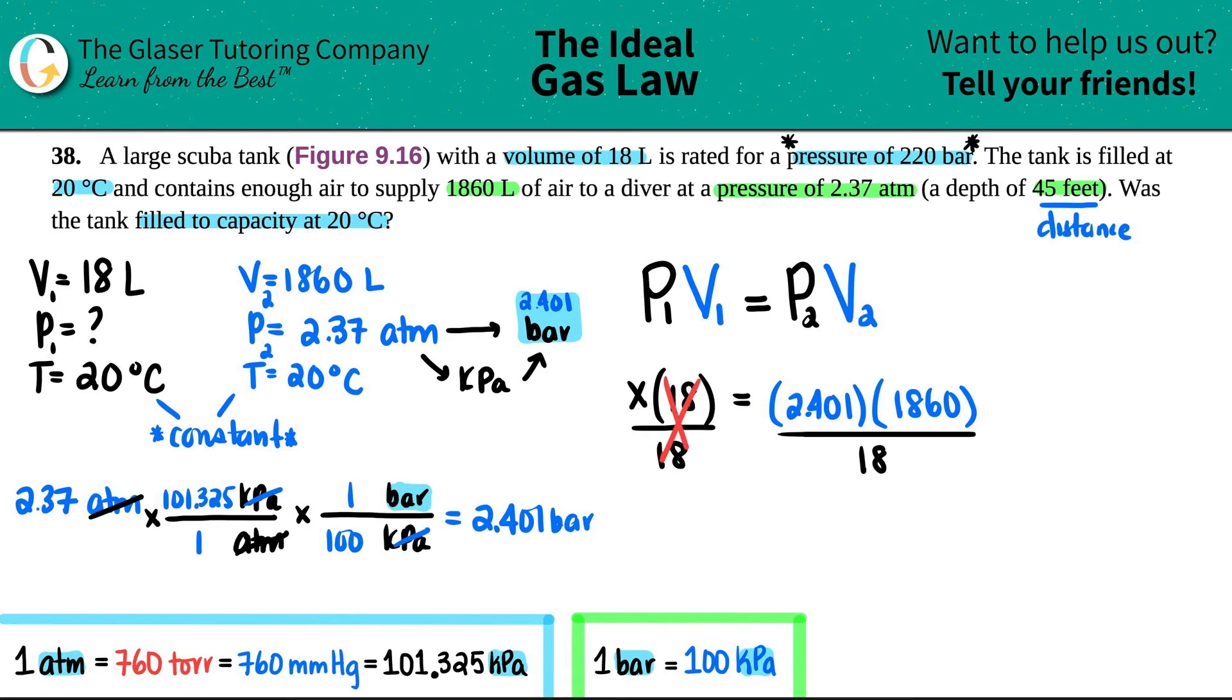This will cancel out, and now we're left with x equals—let's figure it out—2.401 times 1860 divided by 18. I get 248 bar. Remember, whatever the pressure unit that you plugged in—actually here it was 2.401 bar—that means that your answer is going to be in bar for the new pressure.